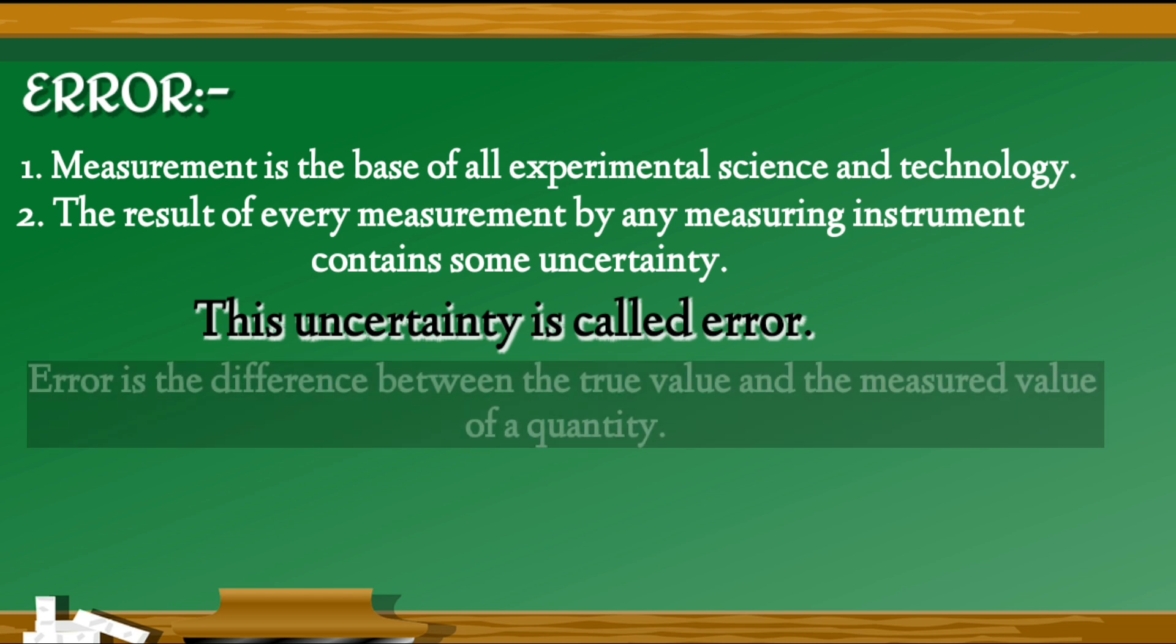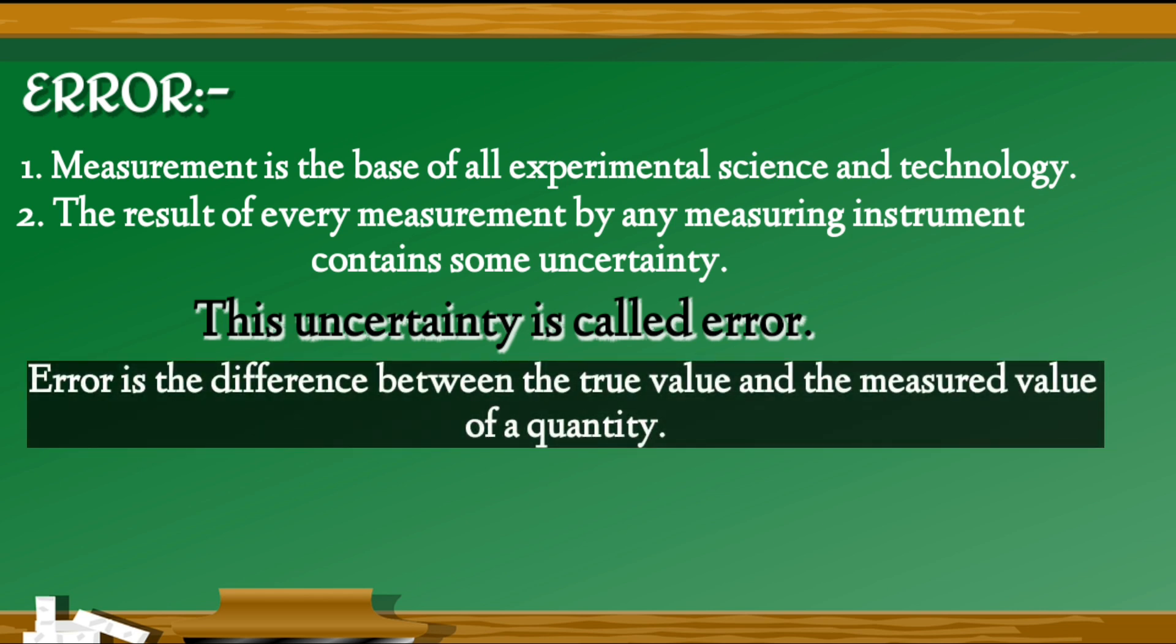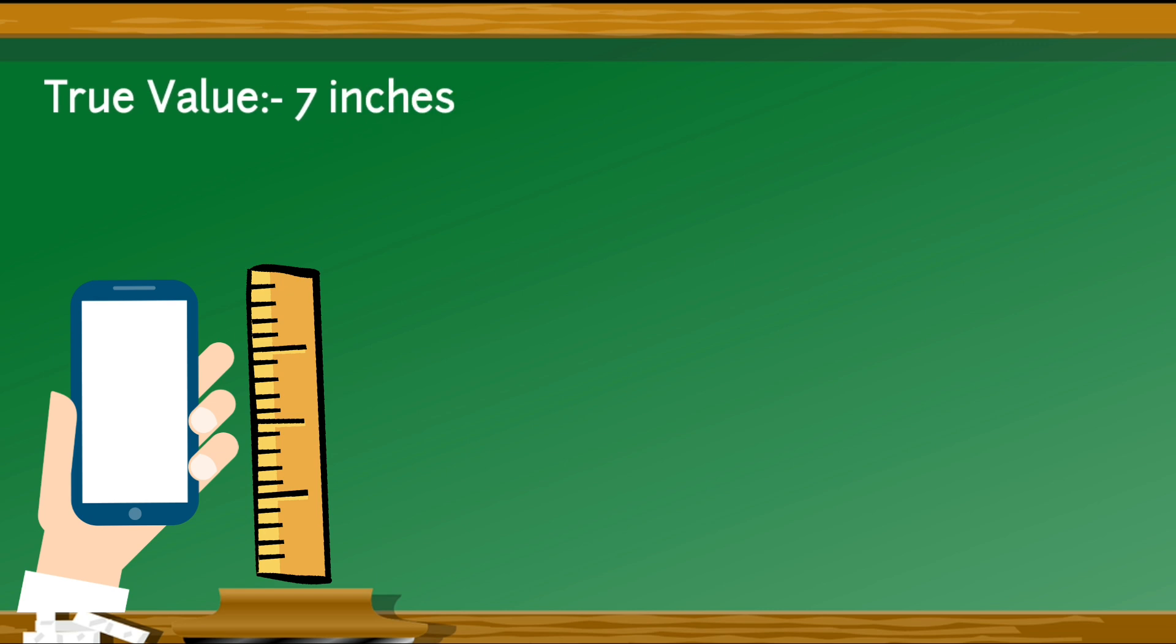In measurements, it is the difference between the true value and the measured value of a quantity. For example, suppose we are measuring the length of a mobile. Now the true value of the length of the mobile is 7 inches, but we have got the measured value as 7.2 inches. So there is some error.